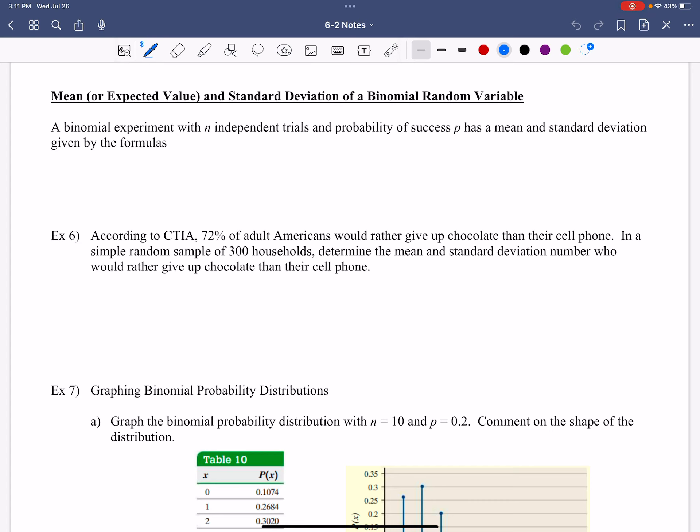So a binomial experiment with N trials. Check it out, we're still using the same thing. Probability of success is P. Has the mean and the standard deviation by these formulas. The mean of X here is NP. The standard deviation of X is the square root of NP times 1 minus P. Those are parentheses. Make those bigger so we can see them better.